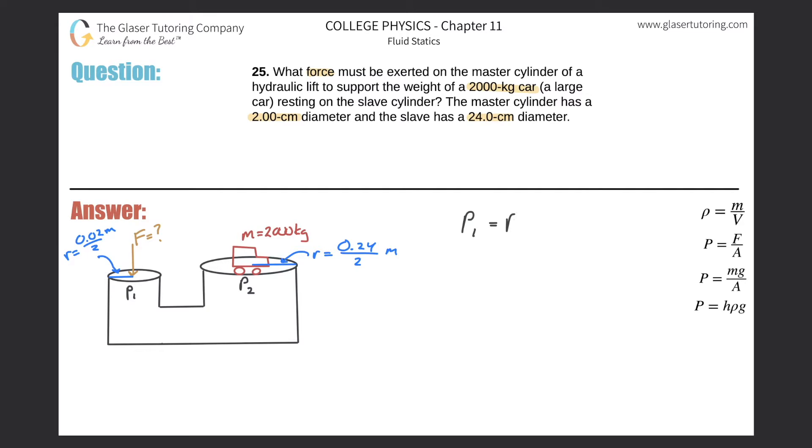So P₁ will equal P₂. Now let's expand on the pressures. We know we're talking about forces and it looks like we're going to get into areas, so I'm going to substitute F over A for each. This would be the force on the master cylinder divided by the area of the master cylinder—really I could have called this the pressure of the master cylinder—should equal the pressure of the slave cylinder. So this will be the force at the slave cylinder divided by the area of the slave cylinder.